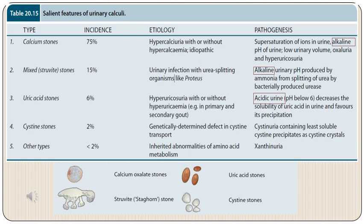The most common stones are calcium stones — calcium oxalate, calcium phosphate, or mixed — accounting for about 75 percent of total stones. They tend to occur in patients with hypercalciuria, which can be with or without hypercalcemia. These stones precipitate in alkaline medium; contributing factors are supersaturation of calcium ions in urine, low urinary volume, oxaluria, and hyperuricosuria. The next common variety — struvite stones (magnesium ammonium phosphate) — account for about 15 percent of cases and tend to occur in patients with urinary infections with urease-splitting organisms like Proteus.